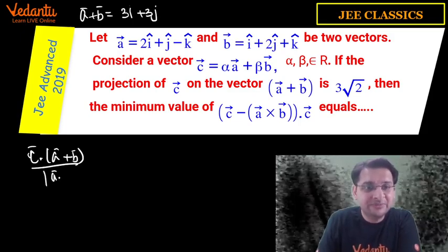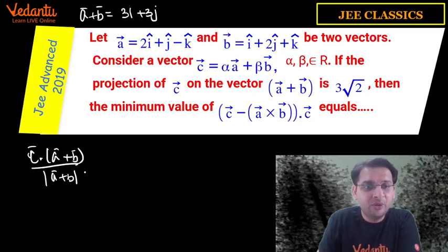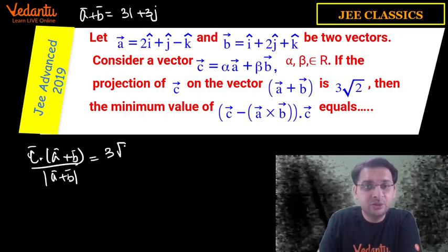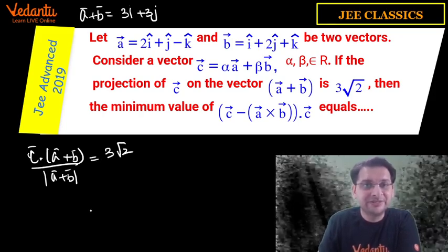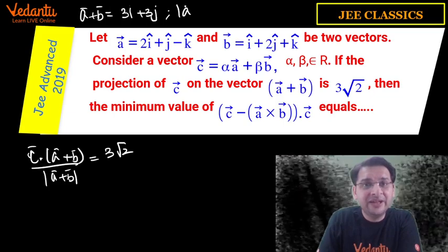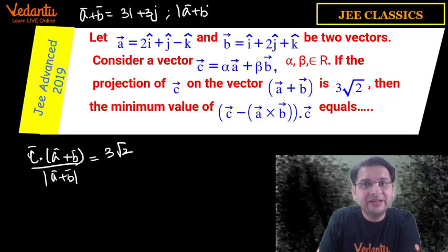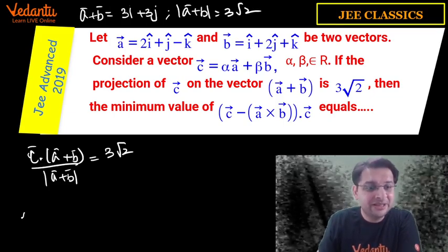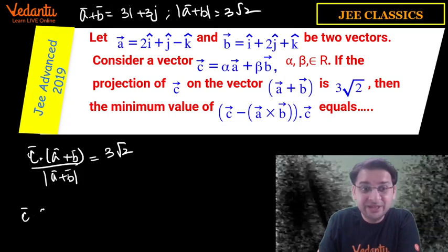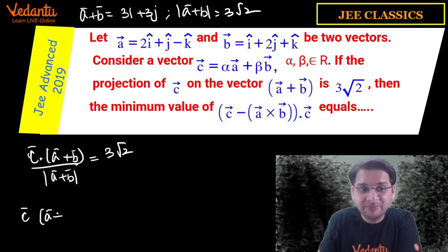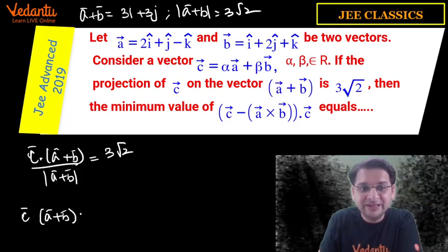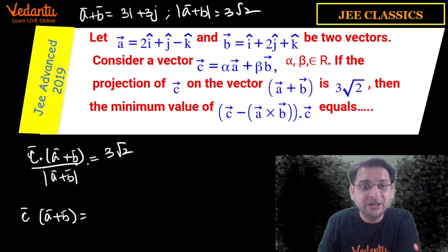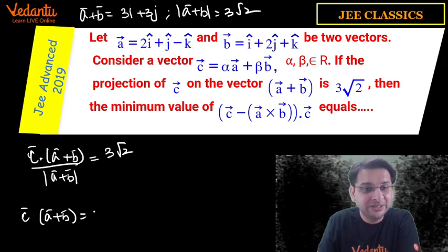So the minimum value expression becomes 6α² + 6β² + 6αβ, which simplifies to 6(α² + αβ + β²). Now we use the projection constraint: c · (a + b) divided by |a + b| = 3√2. We need to find |a + b|. Then c · (a + b) = 3√2 × 3√2 = 9 × 2 = 18.